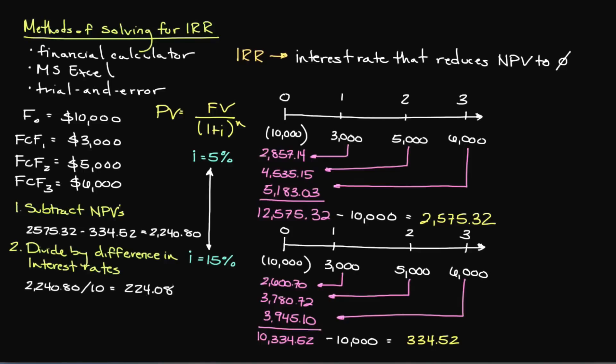If you're curious, this represents how much our NPV rises and falls with a one percentage increase or decrease in our interest rate. Our third step is to determine how many percentage points are between the two interest rates we selected. To do this, we divide our higher NPV, which is $2,575.32, by the result of step two, which is $224.08, giving us $11.49.